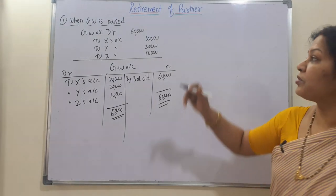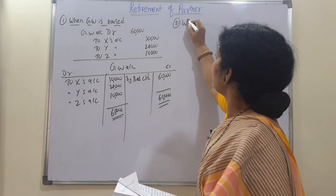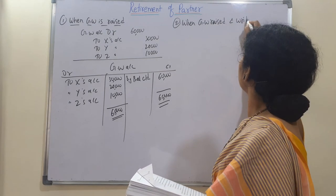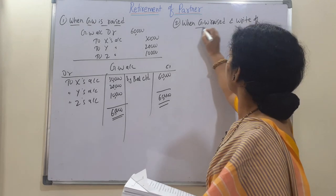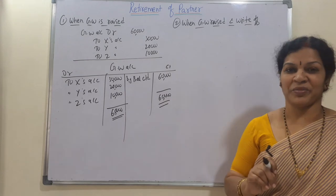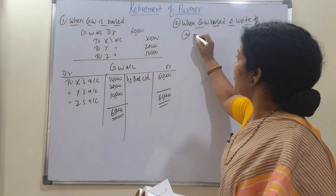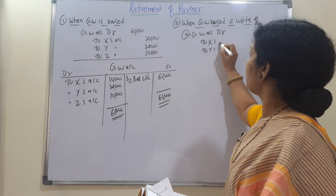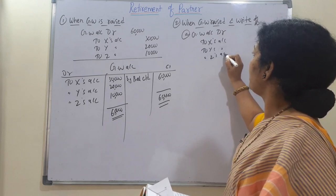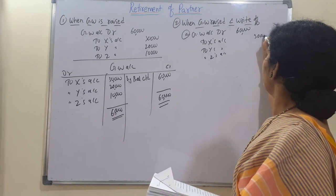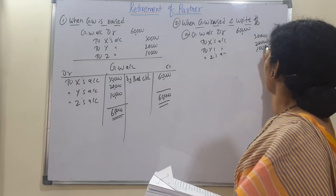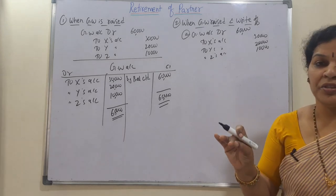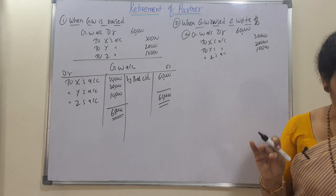Second case: goodwill is raised and written off. First, the raising entry is the same — Goodwill Account Dr. to X's Account, Y's Account, Z's Account: 30,000, 20,000, and 10,000 respectively. Narration: being goodwill raised and distributed to partners' accounts in the ratio of 3:2:1. That entry covers the raising part.